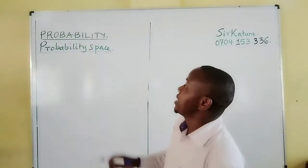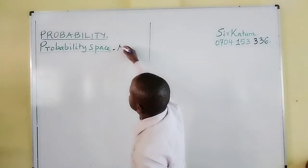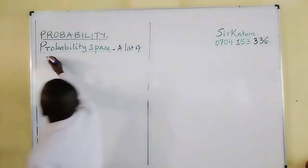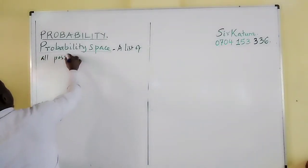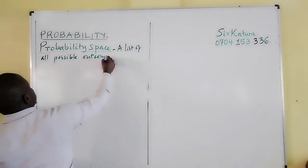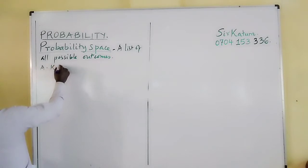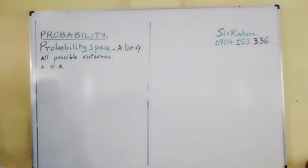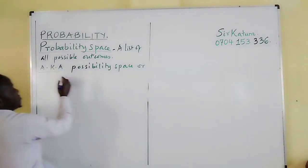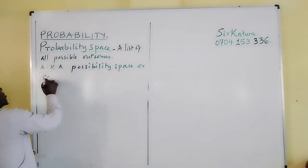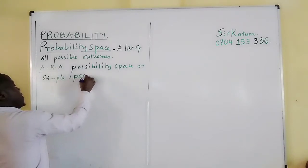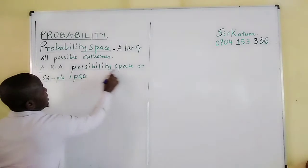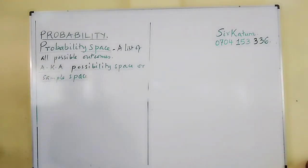In other terms, when we talk of probability space — also called sample space or possibility space — we simply mean a list of all possible outcomes of any given event.